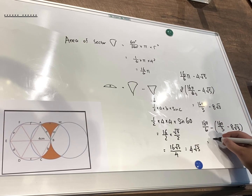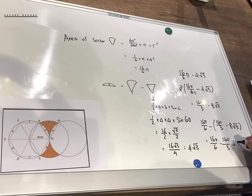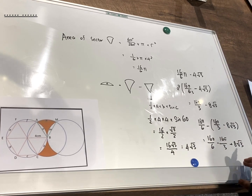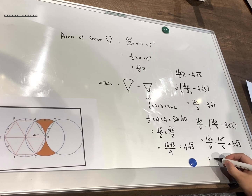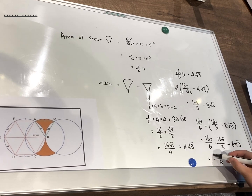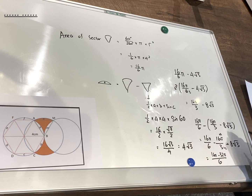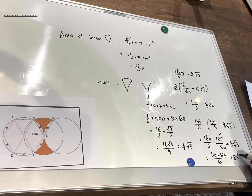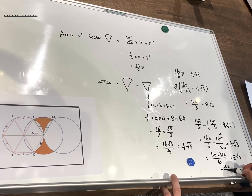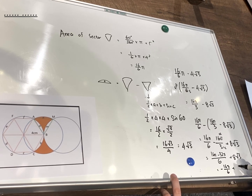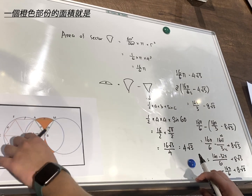Expanding the expression, we get 16π over 6 minus 16π over 3 plus 8√3, because the negative sign distributes. Making the fractions the same denominator, we get 16π minus 32π over 6 plus 8√3, which simplifies to negative 16π over 6 plus 8√3. So this is the area of one orange shaded region.